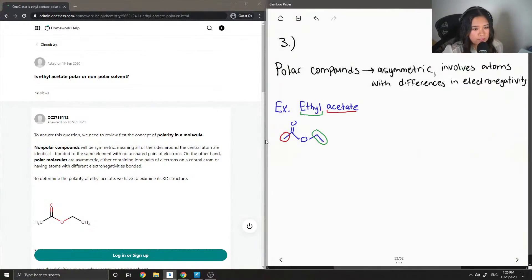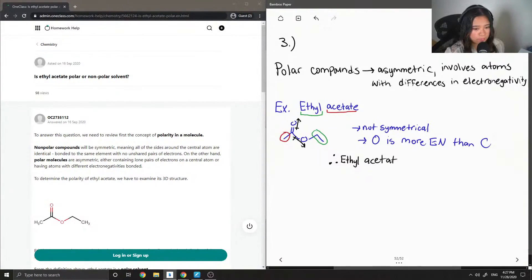So let's notice its structure. Here, you'll notice that it's not symmetrical. And also, let's recall that oxygen is more electronegative than carbon. So we can actually draw out dipole moments pointing in the direction of the oxygen atoms. So because of all of these different factors, we can say that ethyl acetate is polar.